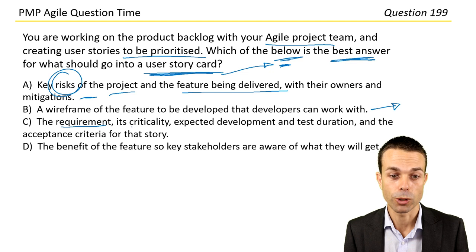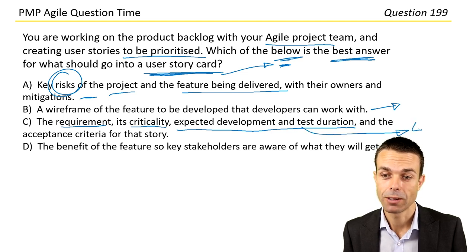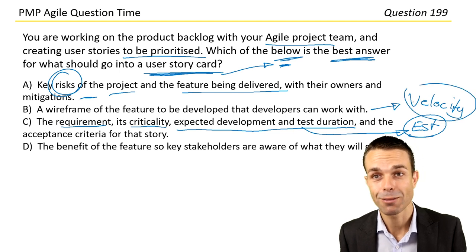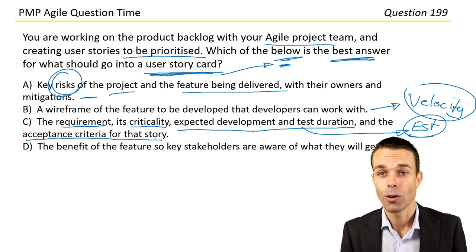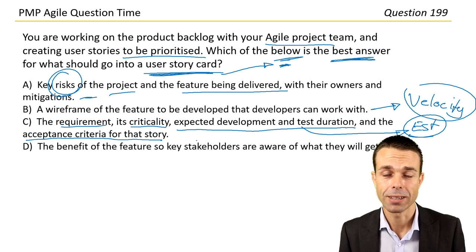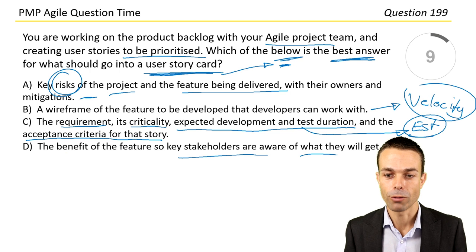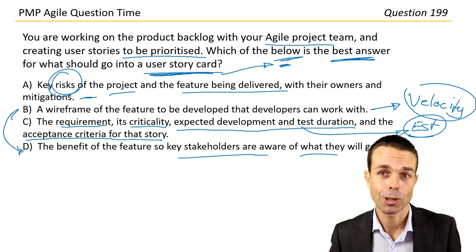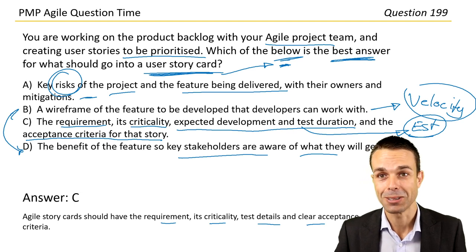The requirement, its criticality, expected development and test duration — that's fair, those are our estimates for the cards, which help figure out velocity once we complete cards in a sprint — and the acceptance criteria for that story. How do we know when it's done? What are the steps to test it against? The benefit of the feature so stakeholders know what they'll get is also good. Answer C: Agile story cards should have the requirement, criticality, test details, and clear acceptance criteria.